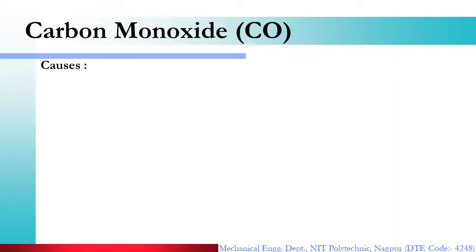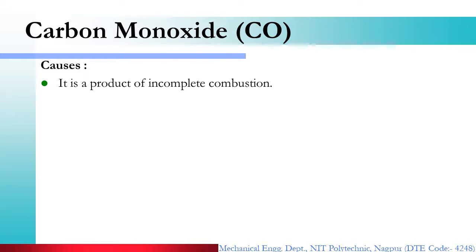The first pollutant we are going to discuss is carbon monoxide, called CO. It is the product of incomplete combustion. We have read in earlier videos about SI and CI engine combustion processes. If the combustion in a CI or SI engine is not proper — that is, incomplete — then carbon monoxide is developed.